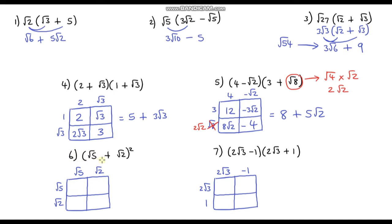Question 6: we've got (√5 + √2) all squared. Be careful — don't just square individual terms. Squaring means multiplying the expression by itself: (√5 + √2)(√5 + √2). So: √5 times √5 is 5, √5 times √2 is √10, √2 times √5 is also √10, and √2 times √2 is 2. Simplifying: 5 plus 2 is 7, and √10 plus √10 is 2√10. Final answer: 7 plus 2√10.